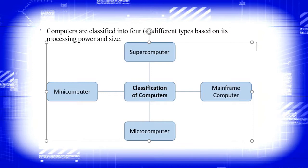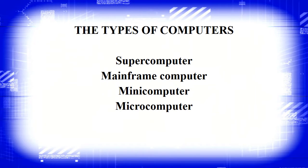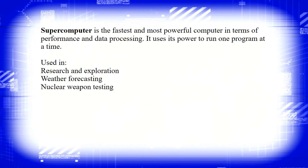Computers are classified into four different types based on processing power and size: supercomputer, mainframe computer, microcomputer, and minicomputer. First, the supercomputer — it is the fastest and most powerful computer in terms of performance and data processing.